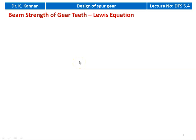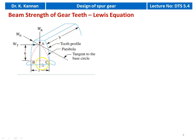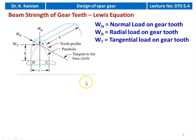Now we discuss beam strength using the Lewis equation. Looking at a diagram of gear teeth, the normal force acting on the gear teeth has three components: WR, the radial component; WT, the tangential component; and the axial component, which is perpendicular to the other two. The axial component has no effect on the strength of the gear tooth. The radial force effect is also very minimal compared to the tangential force. WT and WR are very important for the design of the gear tooth.